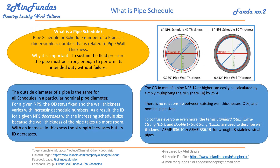What is pipe schedule? Pipe schedule is a dimensionless number representing the thickness of the pipe. It is very important because every pipe is designed to sustain some fluid pressure, and it indirectly represents the strength of the pipe.